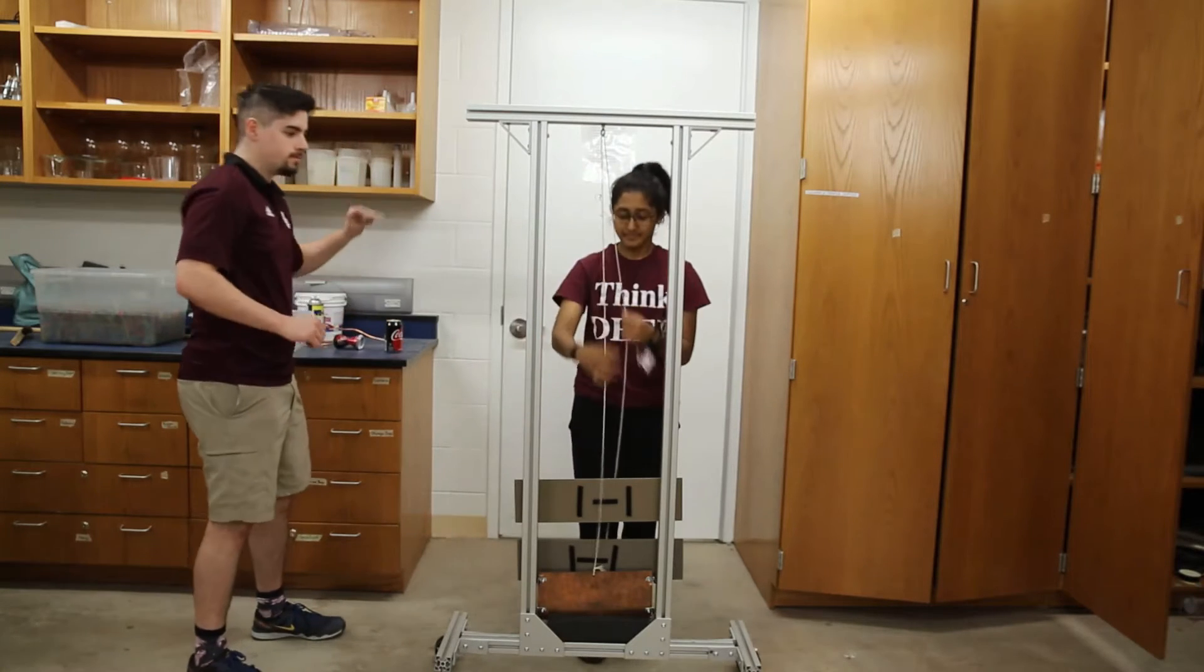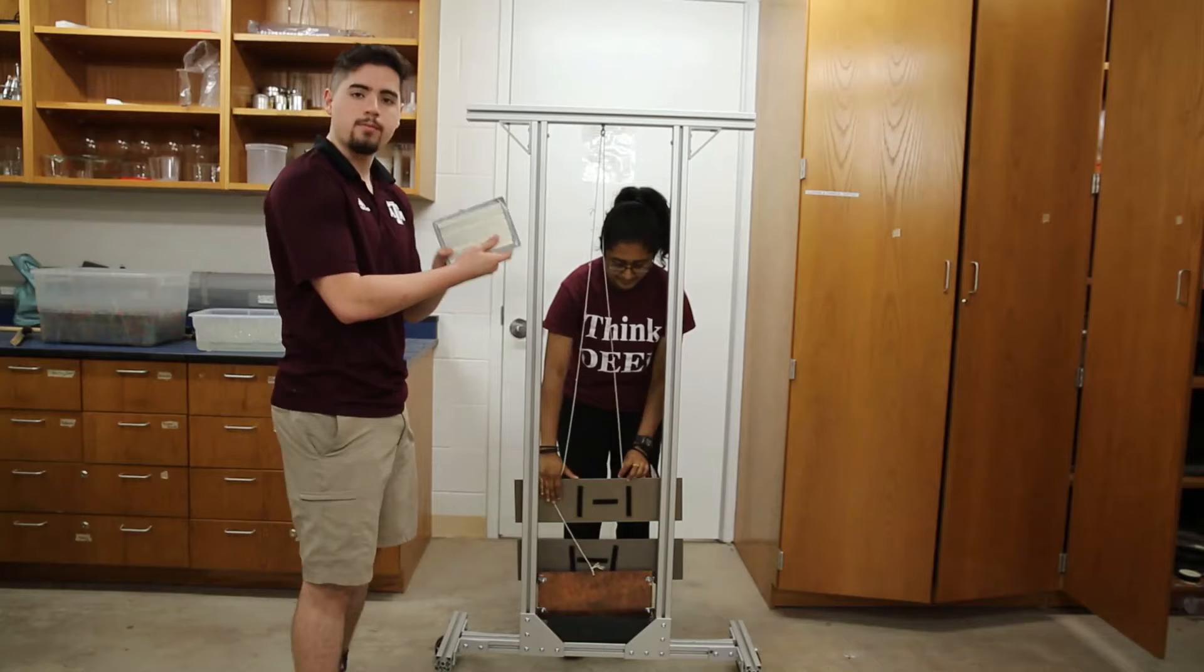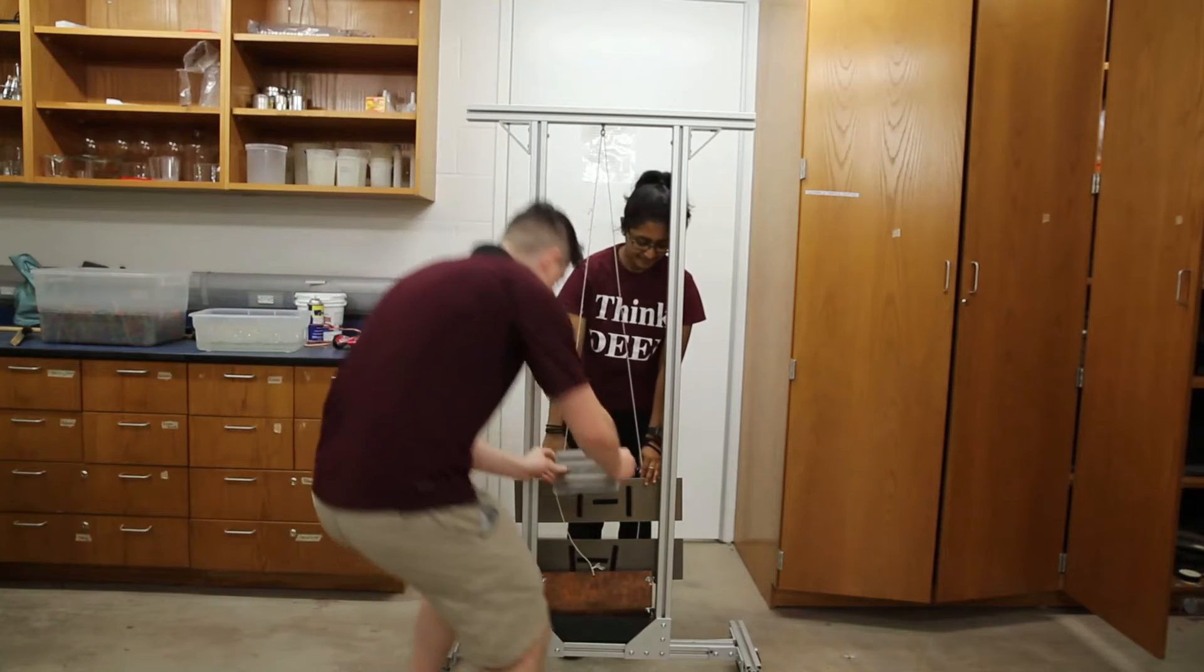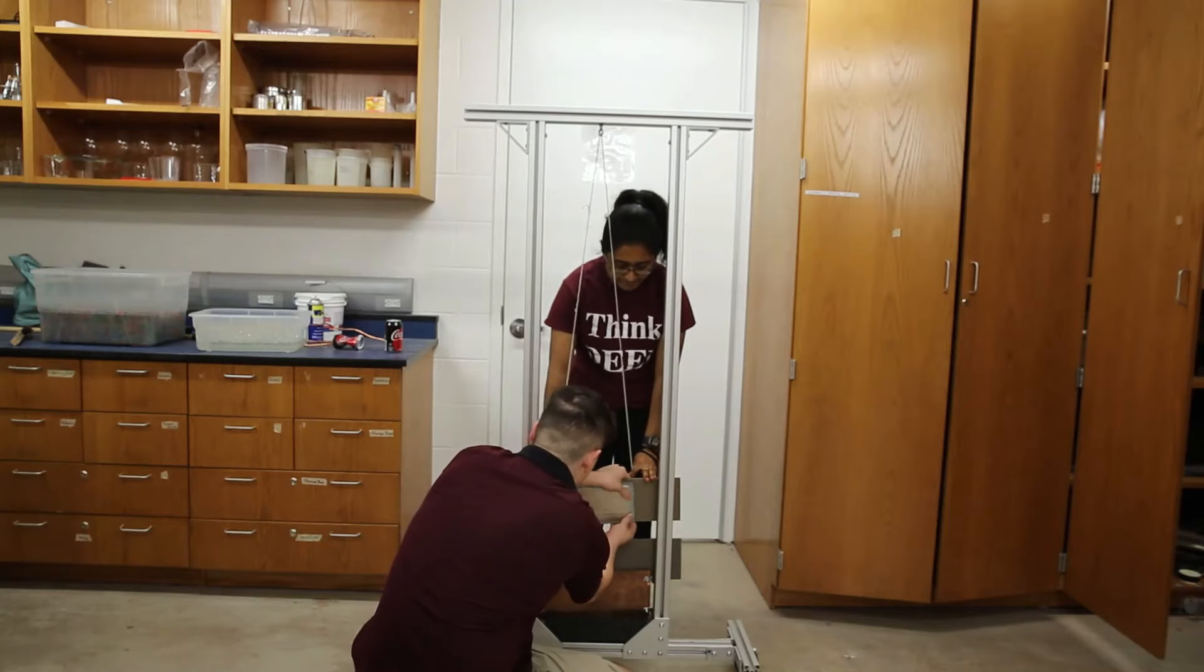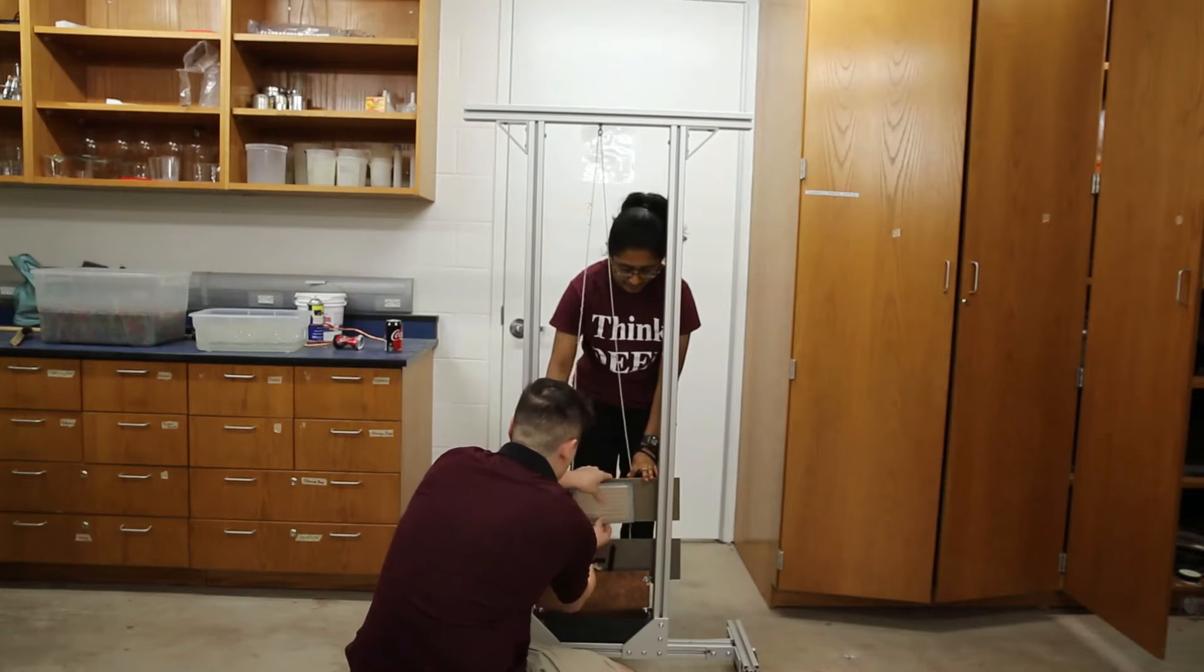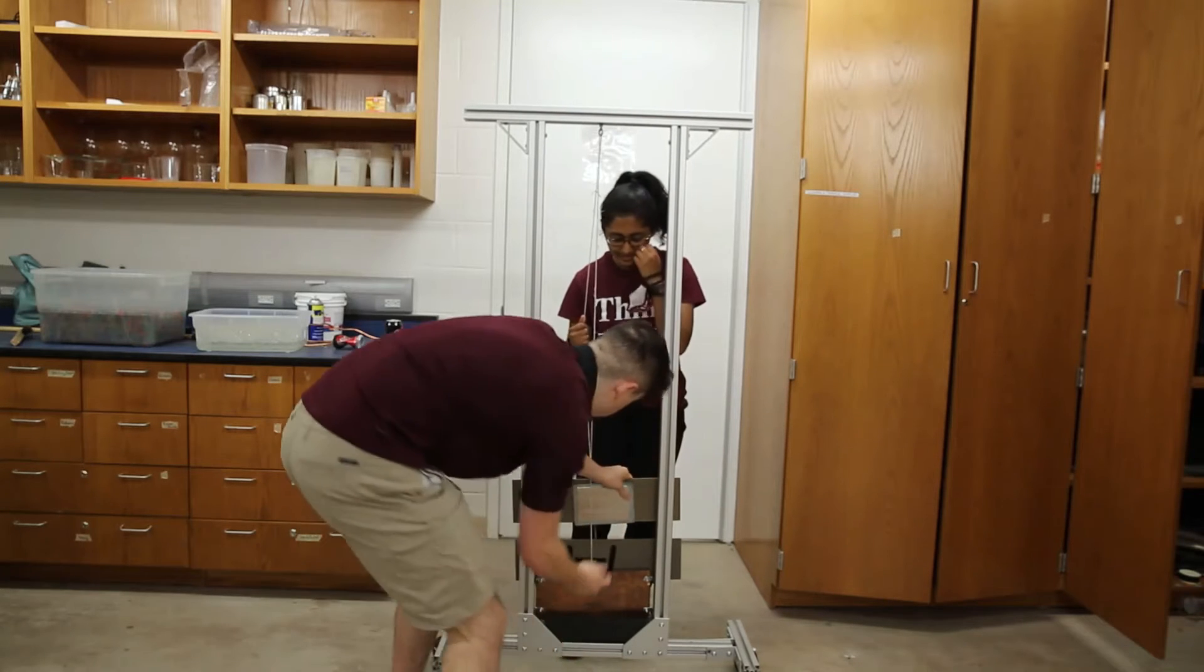Now what we're going to do is introduce an array of magnets here and place this directly on this plate. So that when the copper passes, you're introducing that magnetic field.